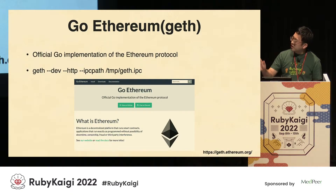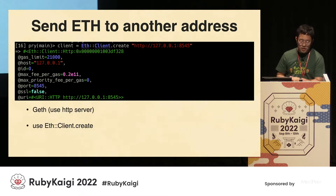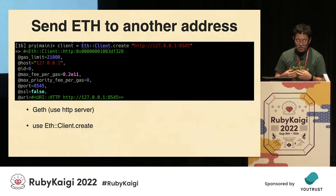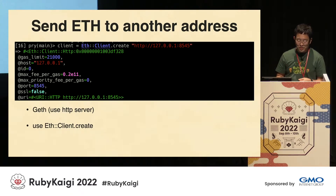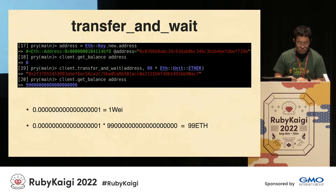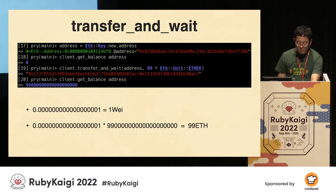Run: geth --dev --http. The logs look like this. Now, create a client with Eth::Client.create. This is to connect to the Ethereum node. Here we are connecting via HTTP. Let's create an Ethereum address and send ETH. When I just created an address, the balance is 0. Try to send 99 ETH by executing the transfer_and_wait function.